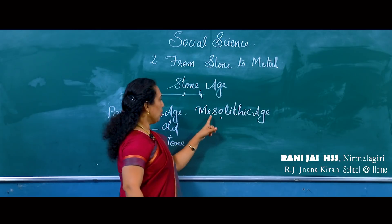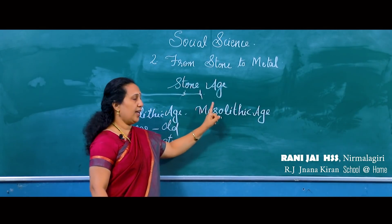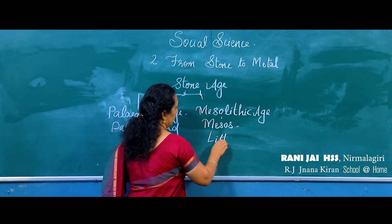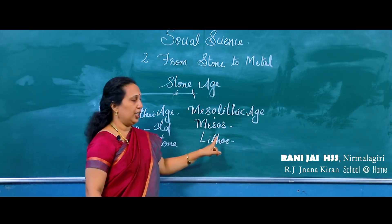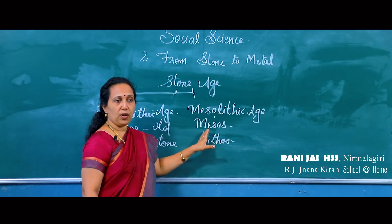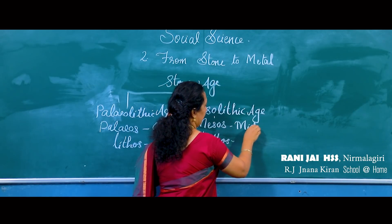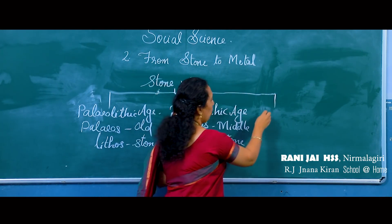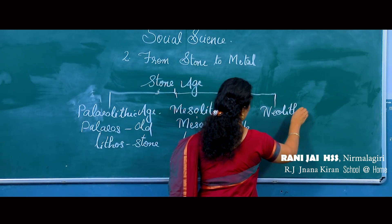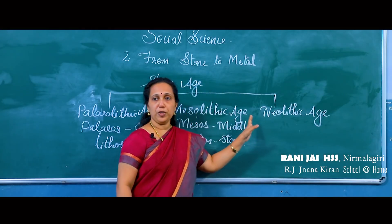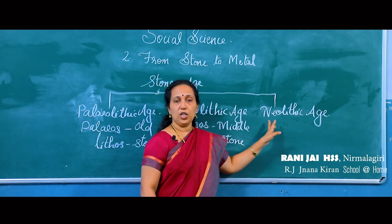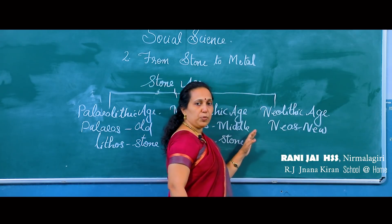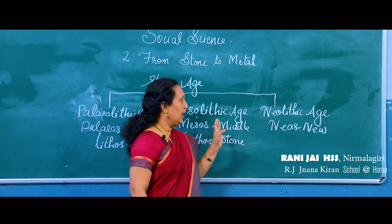Next, the Mesolithic Age. Mesolithic is also derived from the Greek words 'mesos' and 'lithos.' Mesos means middle and lithos means stone, so this period is known as the Middle Stone Age. Next division, the Neolithic Age. Neolithic is derived from the Greek words 'neos' and 'lithos.' Neos means new and lithos means stone, so this age is also known as the New Stone Age.